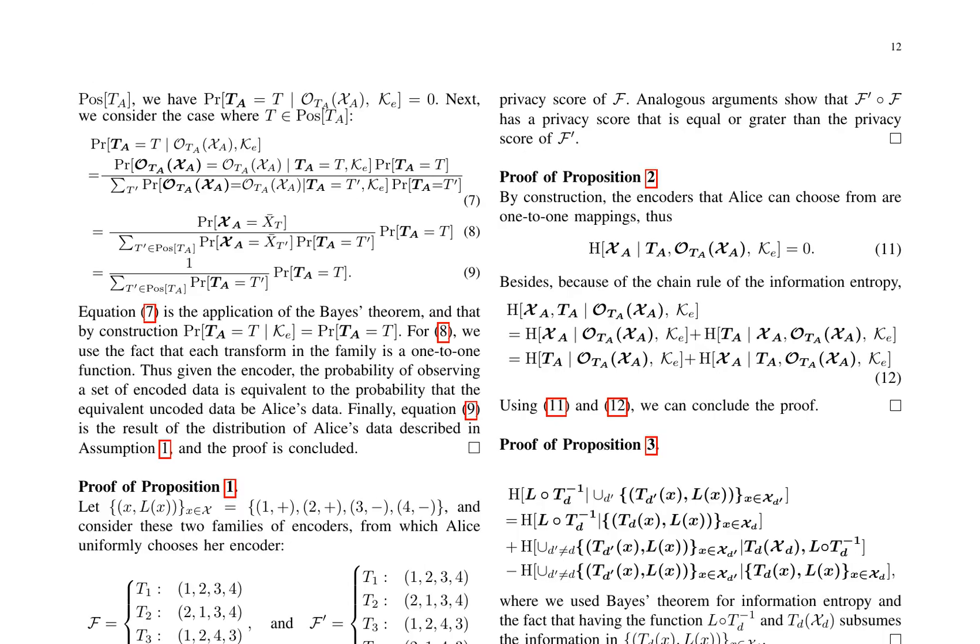This research draws on various sources, exploring the intersection of federated learning, differential privacy, and homomorphic encryption for secure medical image analysis. The concept of guessing entropy is discussed, referencing papers on information theory, machine learning, and cryptography.